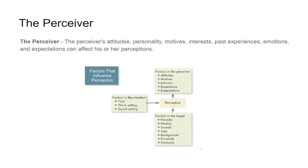Finally, we've got the target — what is the perceiver looking at? What influences does the target have on how well it's perceived? Novelty is certainly there. If you saw two moons up in the sky tonight when we're used to seeing one, that would be novel and would capture your attention. Motion is another factor.